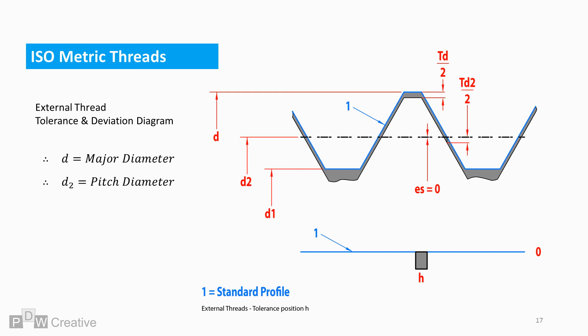The alternative external thread deviation position is H. H again offers zero deviation before tolerancing begins.